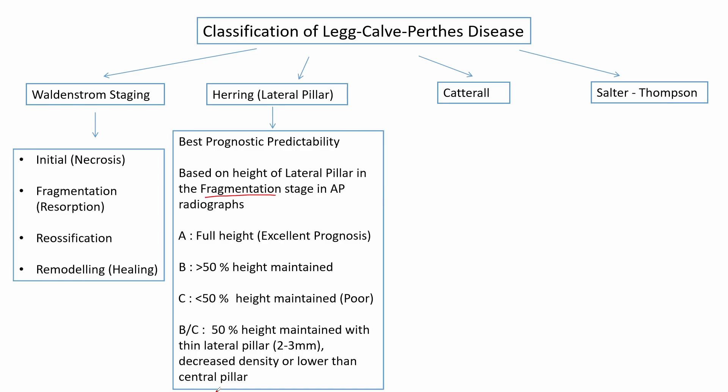A fourth type, the BC type, has been introduced later for better prognostication. In this type, around 50% or slightly more than 50% of the height of the lateral pillar is maintained. However, there is either a thin lateral pillar, decreased density of the lateral pillar, or the lateral pillar is lower in height than the central pillar. In these three conditions, it is classified as BC type.